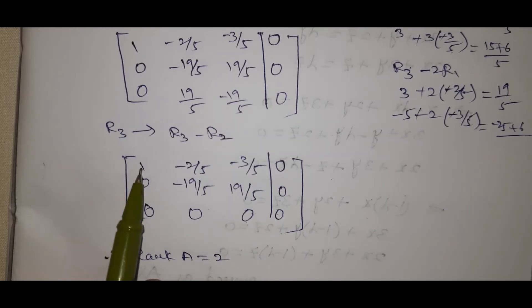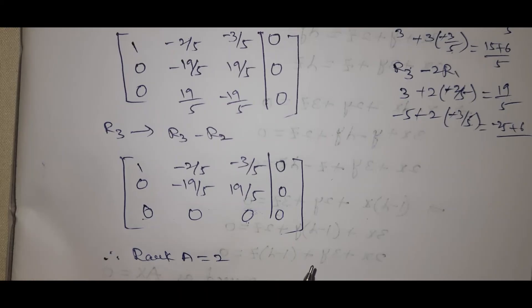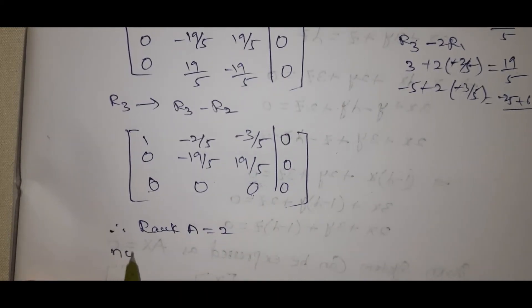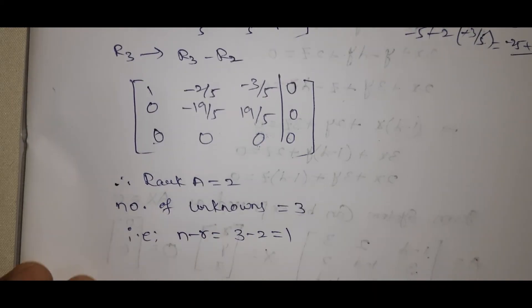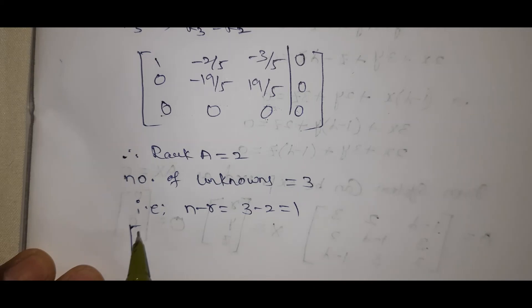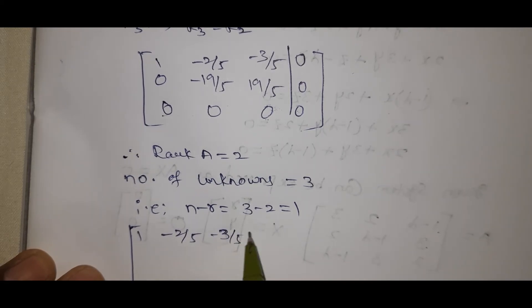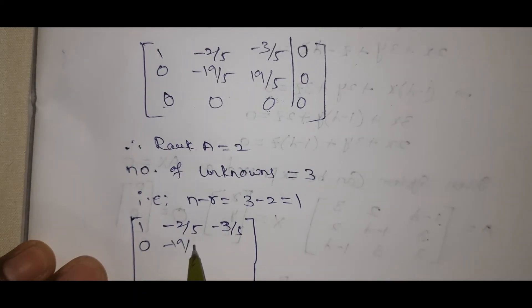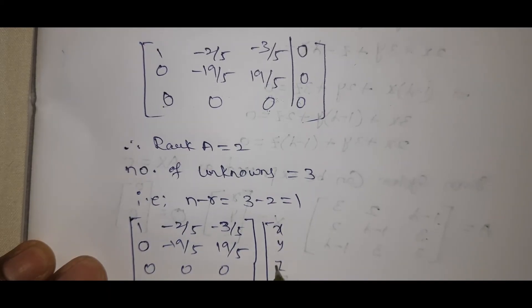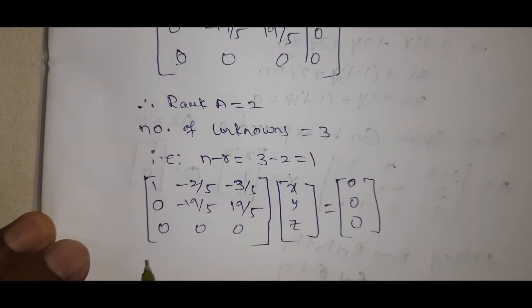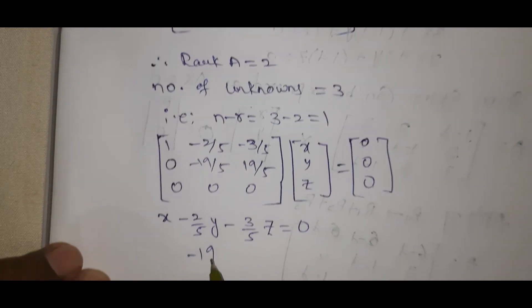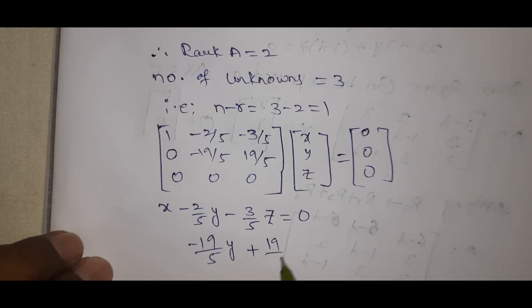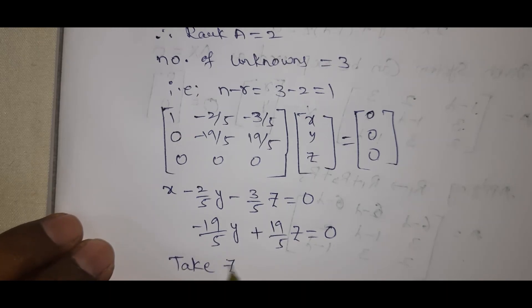Therefore rank(A) = 2. Number of unknowns = 3. So N − R = 3 − 2 = 1, meaning one free variable. From the equations: x − (2/5)y − (3/5)z = 0, and −(19/5)y + (19/5)z = 0. Let z = K (an arbitrary constant).